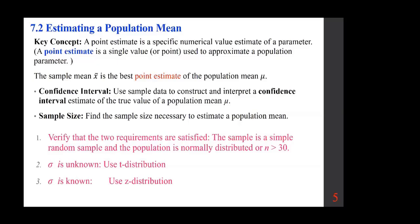Most of the time, sigma is really not known. In fact, in some texts they almost stop talking about the z-distribution. So if sigma — the population standard deviation — is given, we can use the z-distribution; if it's missing, we use the t-distribution. As for the requirements, the sample should be a simple random sample.